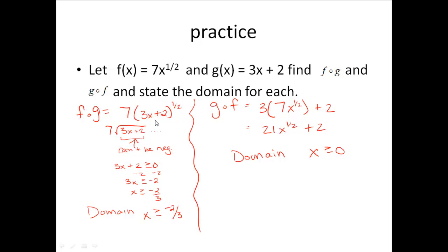Then go back, plug in the 3x plus 2. Now, one thing you have to realize is you cannot distribute this 7 because when it's raised to the 1 half, it's really a square root. So I can't just multiply the 7 throughout because it's not in a square root.